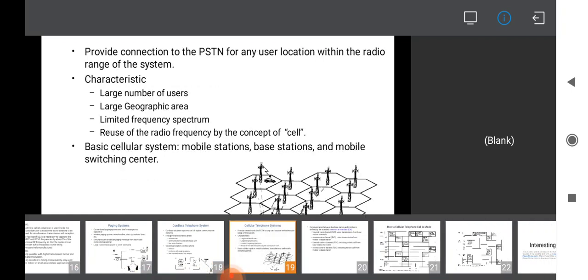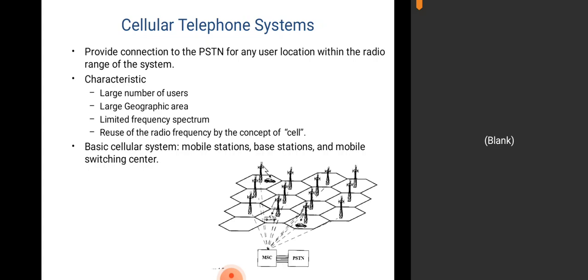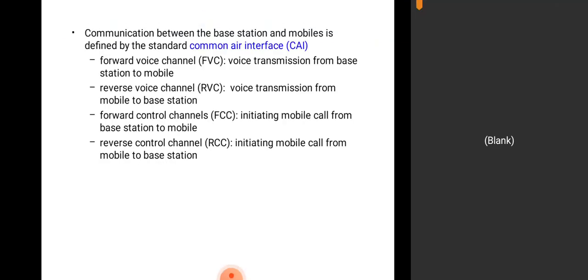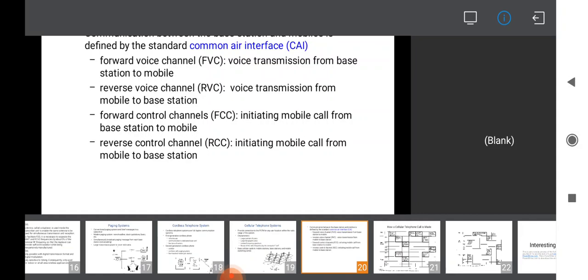Cellular telephone systems provide connection to the public switched telephone network for any user location within radio range. Characteristics include: large number of users, large geographical area, limited frequency spectrum, and reuse of radio frequency through the concept of cells. The basic cellular system consists of a mobile station, base station, and mobile switching center. Communication between the base station and mobiles is defined by a standard common air interface, using forward voice channels, reverse voice channels, forward control channels, and reverse control channels.